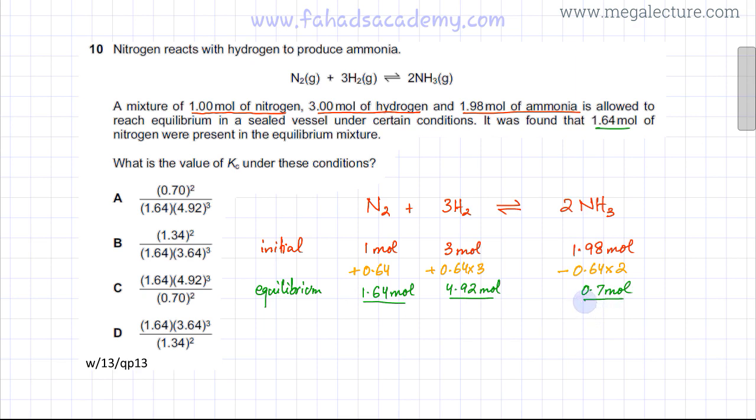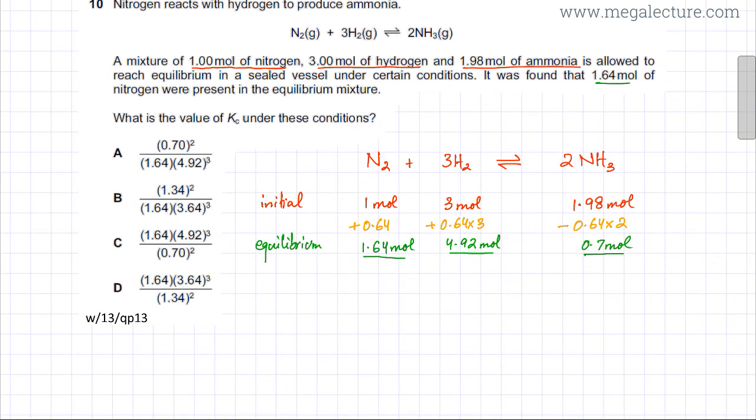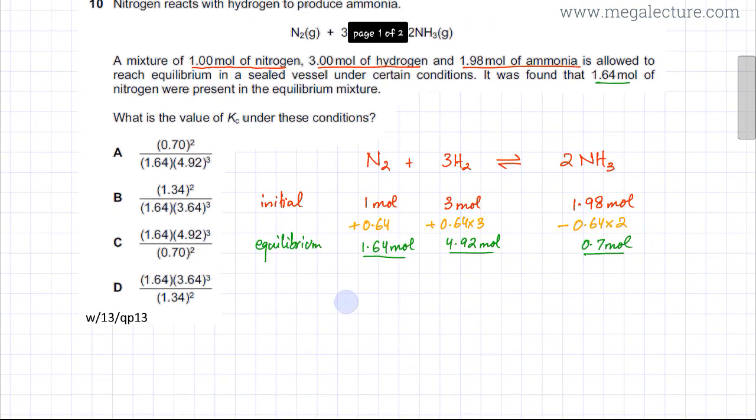The final thing I need to do is calculate the value of Kc under these conditions. Kc is the ratio of the concentration of products versus the ratio of the concentration of reactants. So my product is NH3, so it's going to be the concentration of NH3 squared because the coefficient is 2, divided by N2's concentration times H2 concentration cubed.